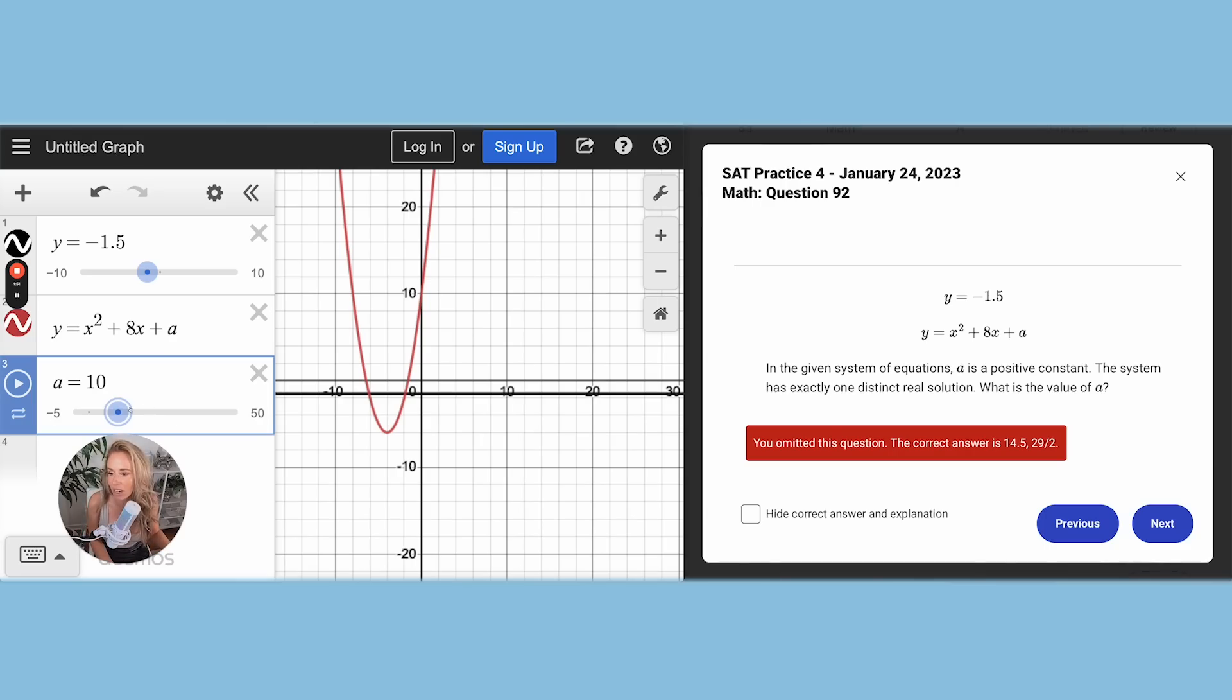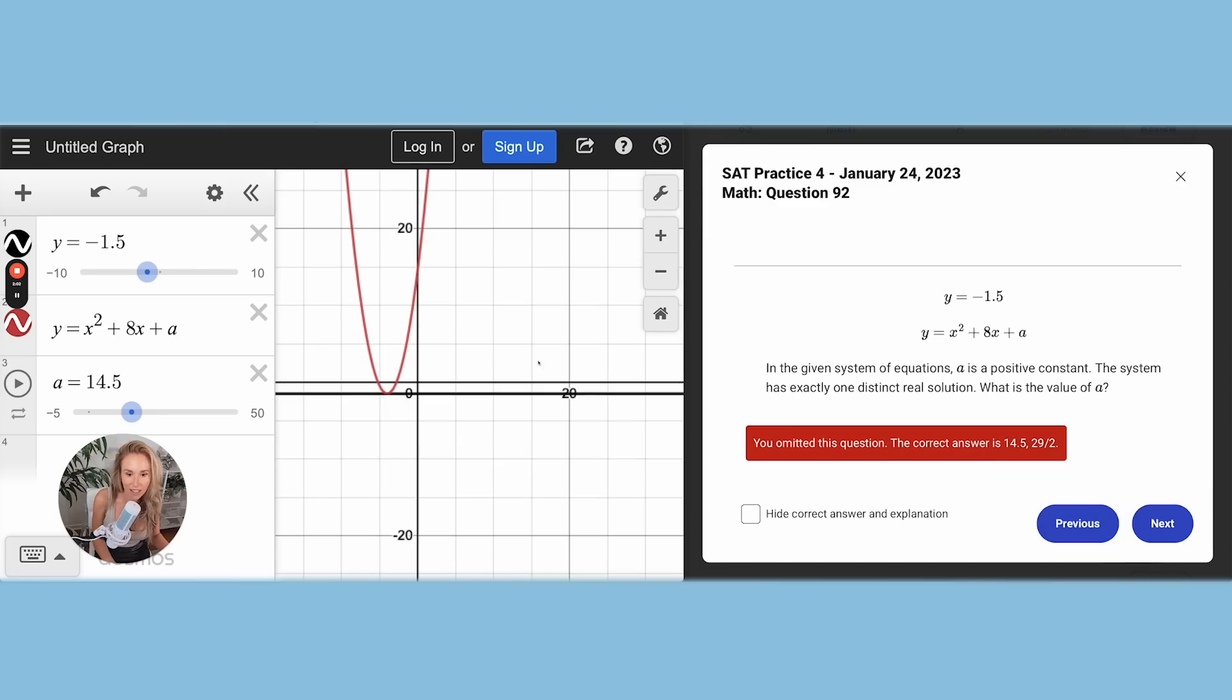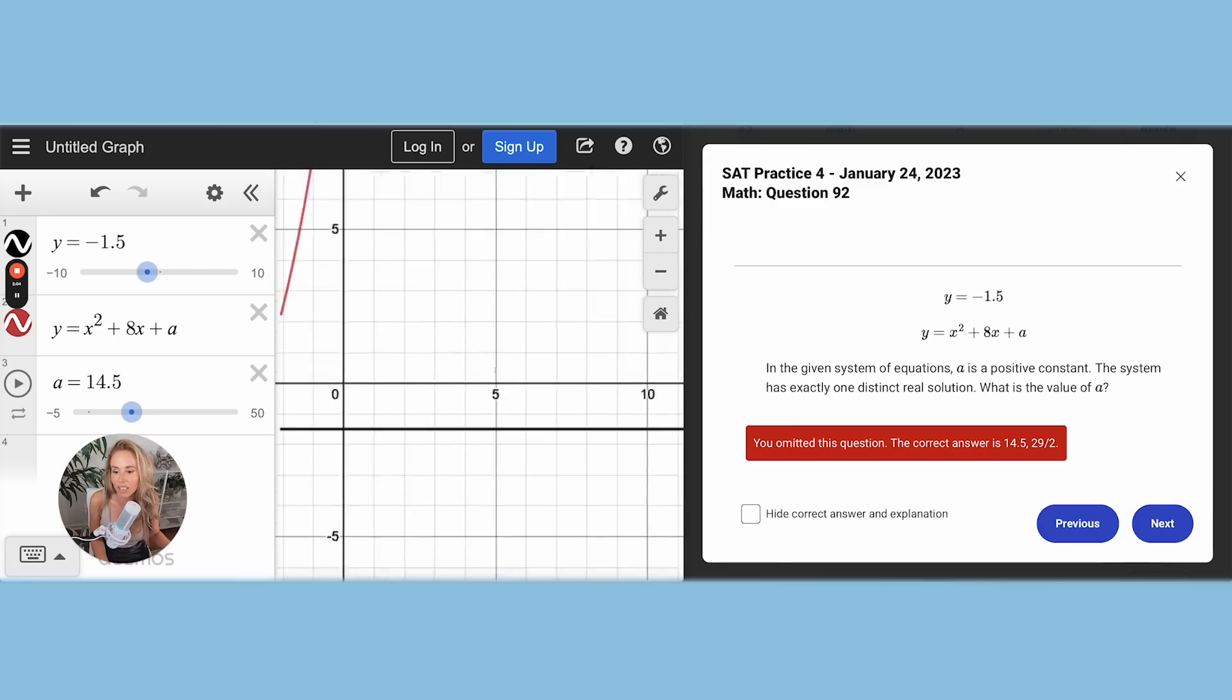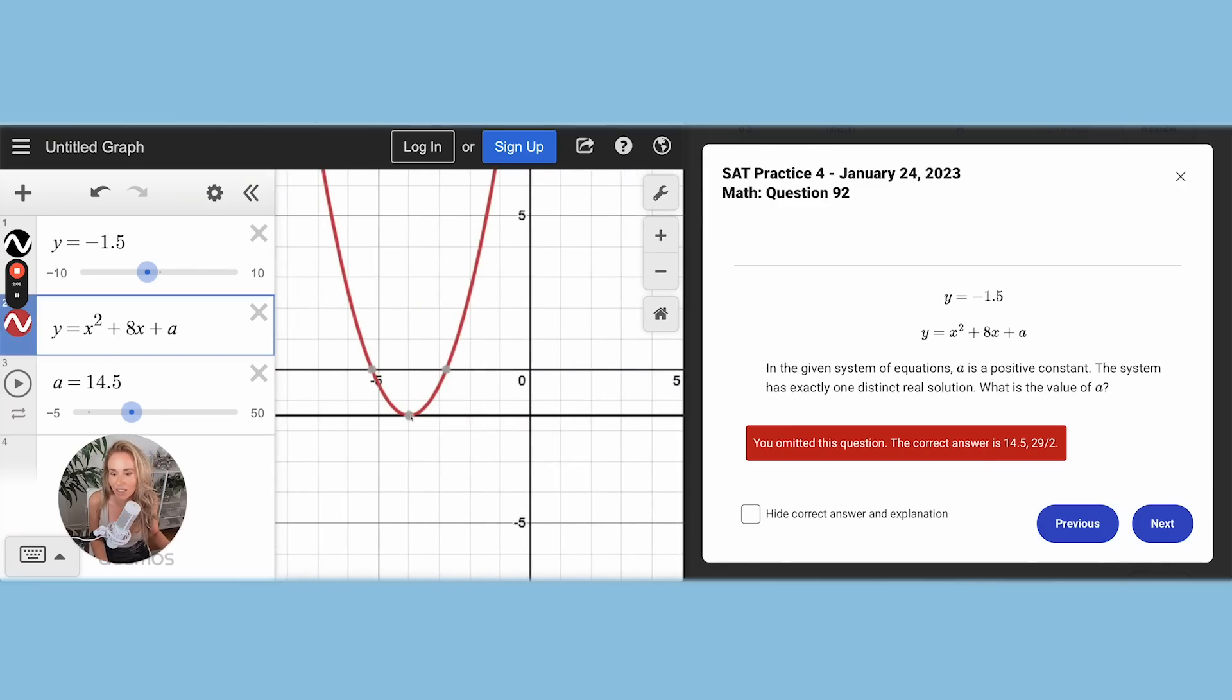So we're going to try that out, and I'm going to keep moving it and keep moving it. Now, as you can see with my mouse, when I scroll it to 14.5, it's exactly on, the vertex is exactly on the line. Do you guys see that? So that means A equals 14.5.